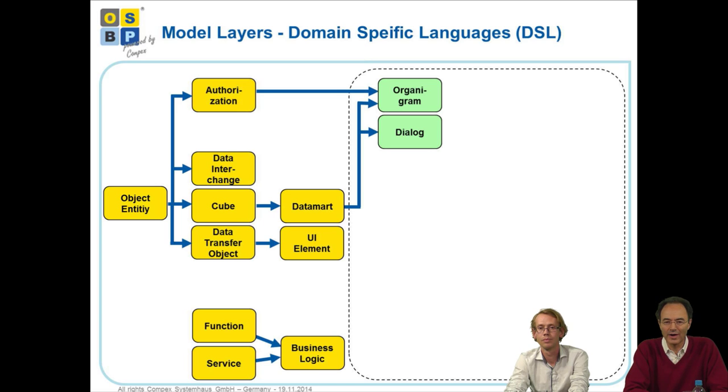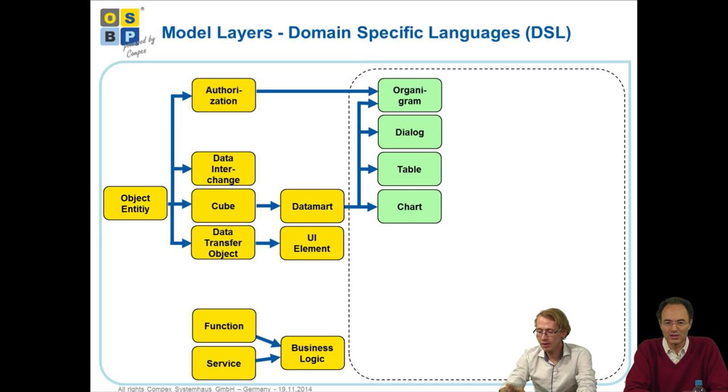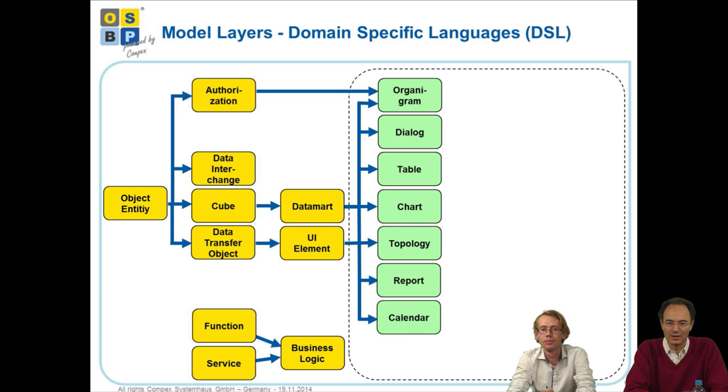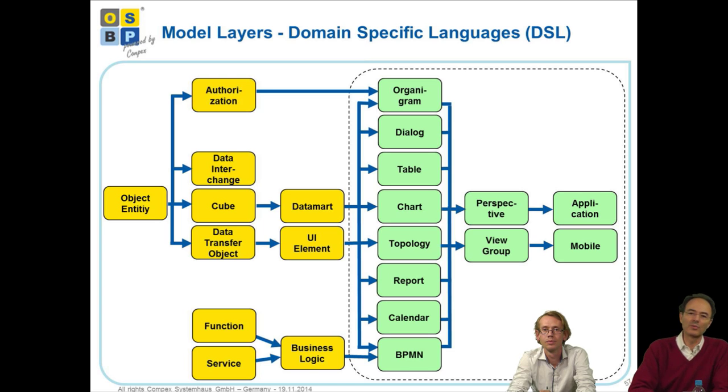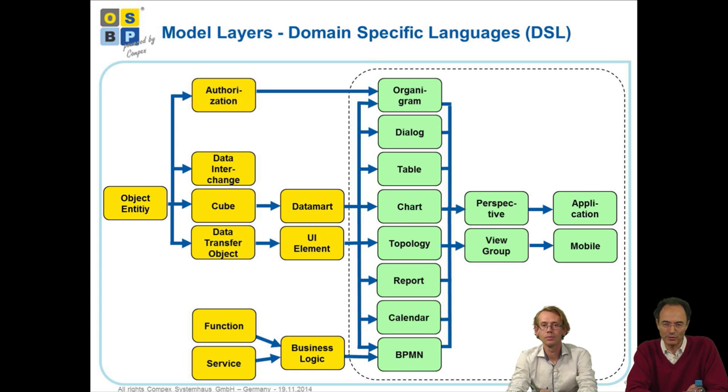You can describe tables in your dialogues, describe charts, so graphical elements, reports and we also have a calendar functionality and visualization, and workflow elements described in BPMN. All these together are then put together in so-called perspectives, and perspectives are put together to the application that the user is seeing on his end device. And the same thing is done for mobile devices, so that when you are modeling an application, you can use it as well on a PC or in a browser as well as on any other device, for example, mobile devices.